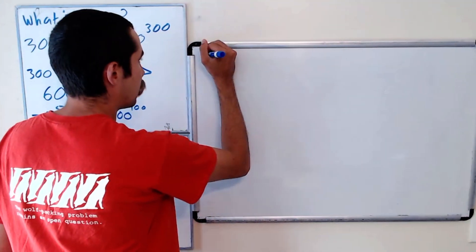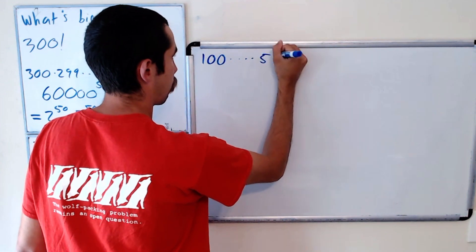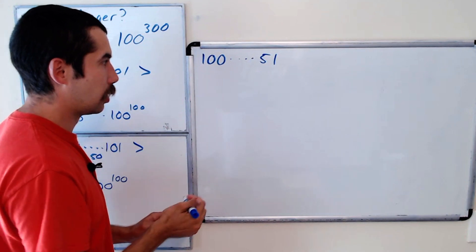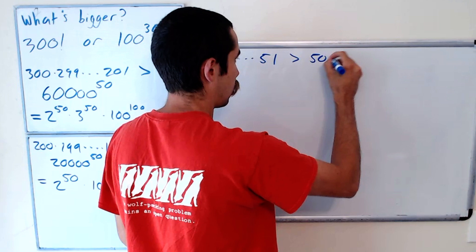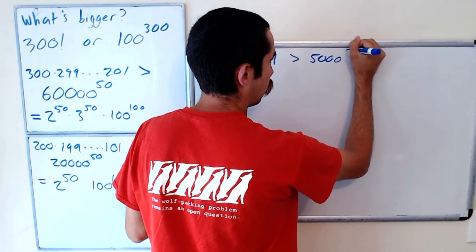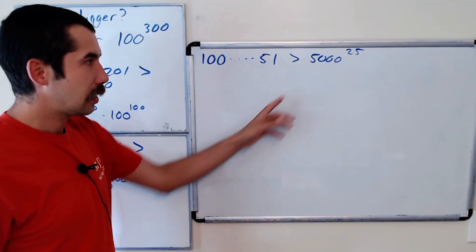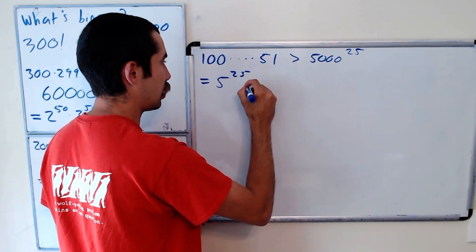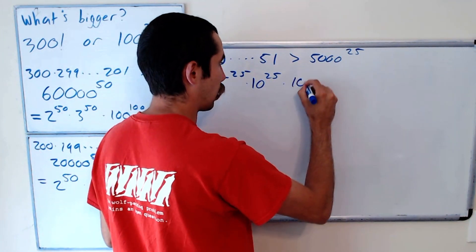Let's go 100 to 51. Okay, with the same idea, we're going to take the outside pairs all the way through. So this is greater than 5000 to the 25 power. Right? And that's equal to 5 to the 25 times 10 to the 25 times 100 to the 25.